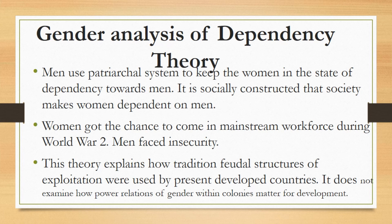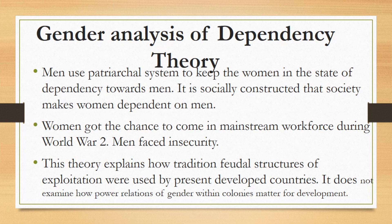In short, dependency theory explains a system of the world where some countries exploit other countries, and the same pattern is prevailing in the context of gender relations — some genders are exploiting others. We can take the example of men versus women. Men are exploiting women in a number of societies. Only developed countries are those in which women are enjoying their full rights, while in all underdeveloped and developing countries women are living in miserable conditions and men are exploiting them. The relation described by dependency and world system theory for countries of the whole world can also be seen in the relation between genders — just as core countries exploit periphery countries, men are exploiting women.